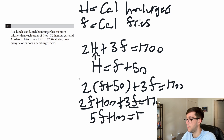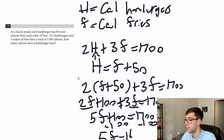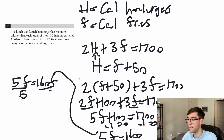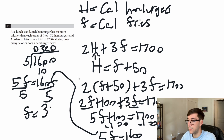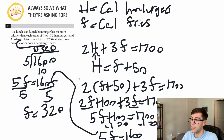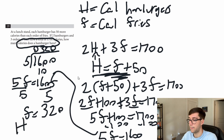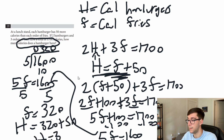Subtract 100 from both sides: 5f equals 1600. Divide by 5: f equals 320 calories. But the problem asks for the calories of a hamburger, so use the comparison equation: h equals 320 plus 50, so h equals 370 calories.